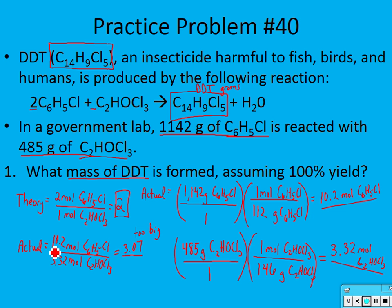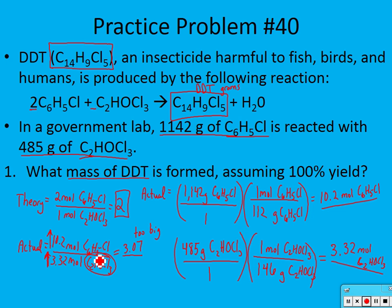If the bottom number were larger, this ratio would go down. We need more of this reactant — so C₂HOCl₃ is your limiting reactant. We did all of that work just to figure out which one is limiting. C₆H₅Cl is the excess reactant.